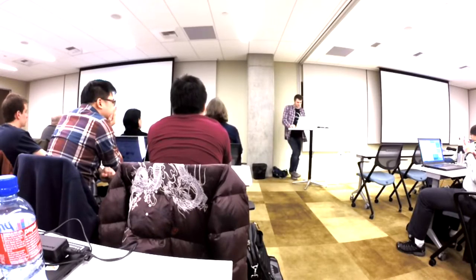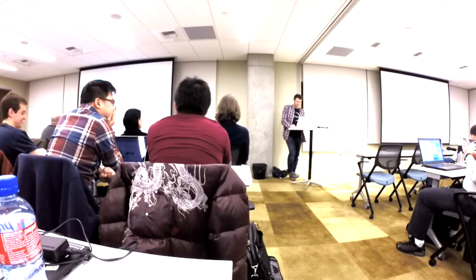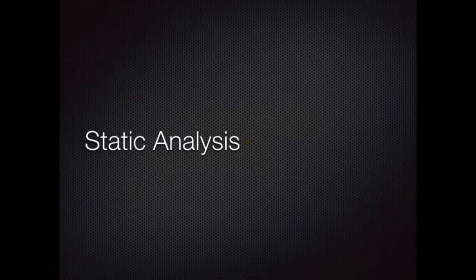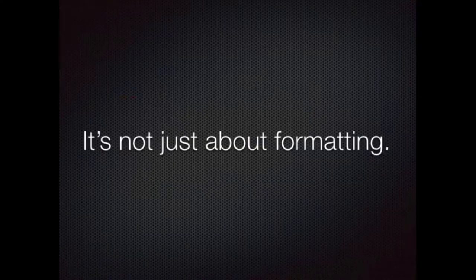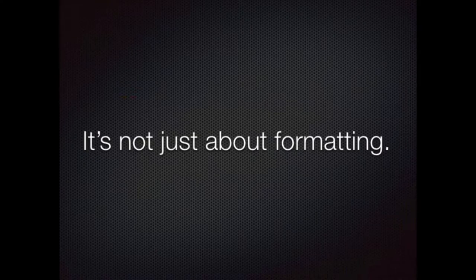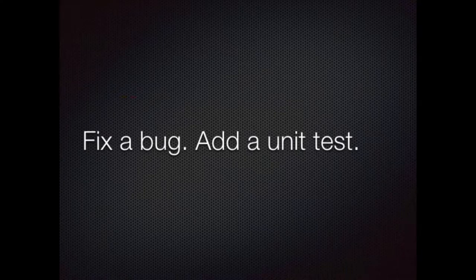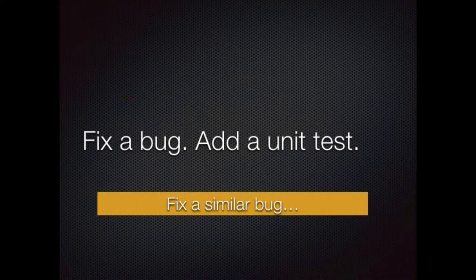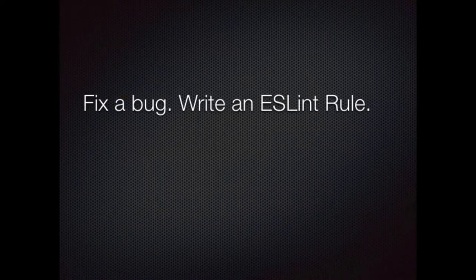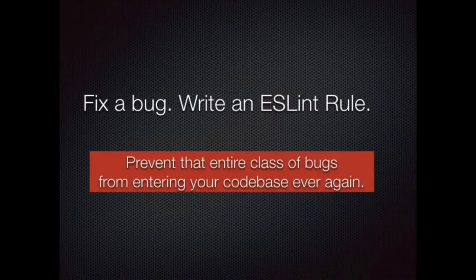Cutting down a whole tree is too complicated — it will fall on you. You just think of one branch at a time. It's much safer. So how do we apply this to static analysis? We talked about linting. I'm a super big fan of ESLint. One of the things I want to get across is that linting is not just about formatting. You think about semicolons, no semicolons, spaces — but actually, this is the genius of static analysis. You can fix a bug and maybe add a unit test, but you might have to fix a similar bug somewhere else. But say you fix a bug and write an ESLint rule that catches that class of bug — then you can prevent that entire class of bugs from ever entering your codebase again.